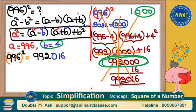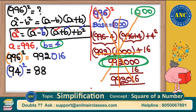Let's verify with 94², which we solved earlier as 8836. 94 is closer to 100, which has two zeros. b = 100 − 94 = 6. Subtract 6 from 94: 94 − 6 = 88. Write down 88. b² = 6² = 36. Instead of writing two zeros, write down 36. Same answer: 8836.